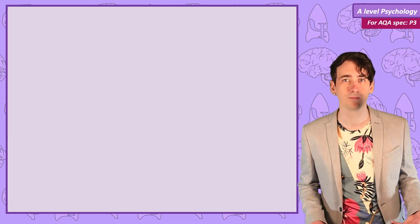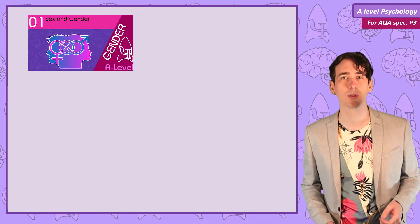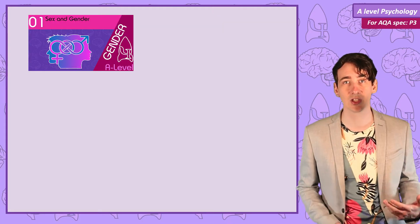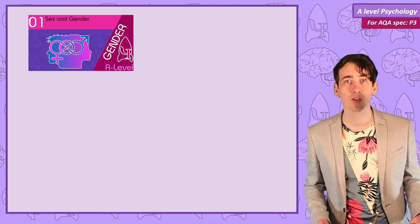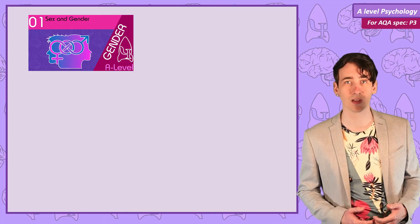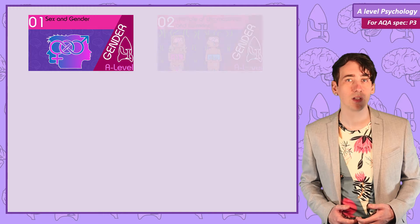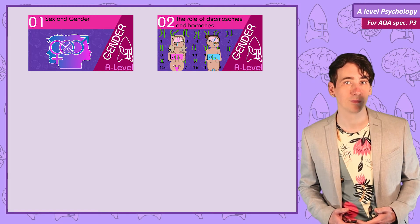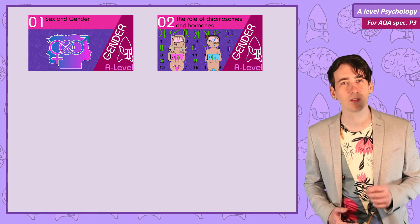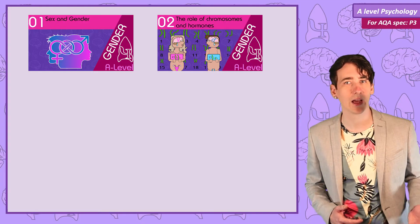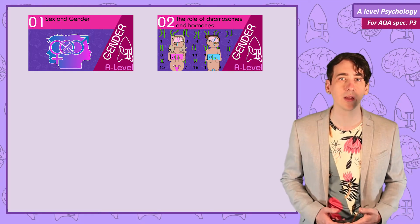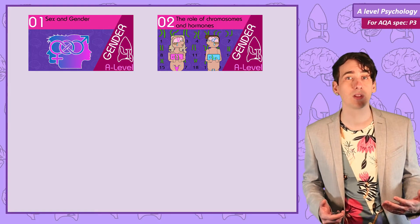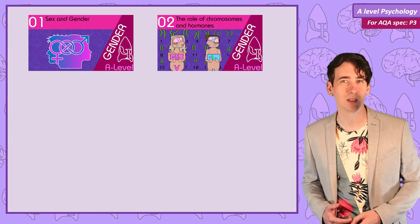So what is in the unit? First we will discuss what the differences are between the terms sex and gender, and how psychologists even try to define someone's gender. We will then spend a video looking at biological explanations for gender development, including some interesting variations on the typical male XY and female XX chromosome pattern.